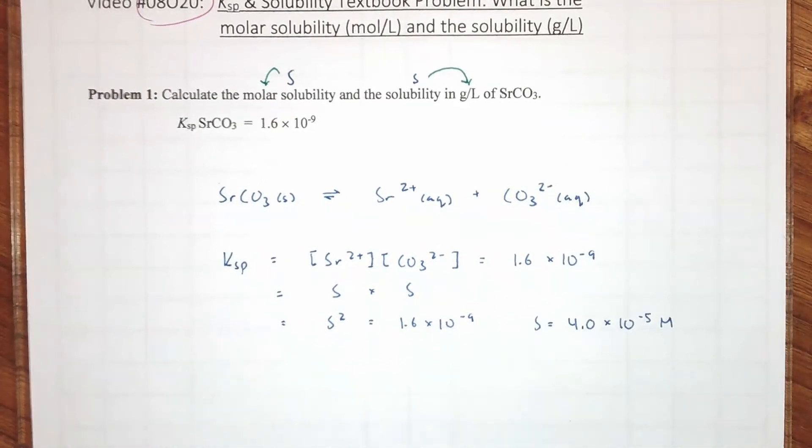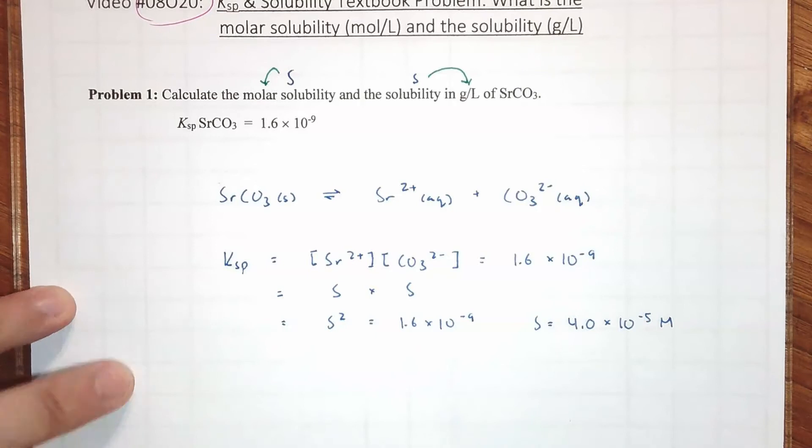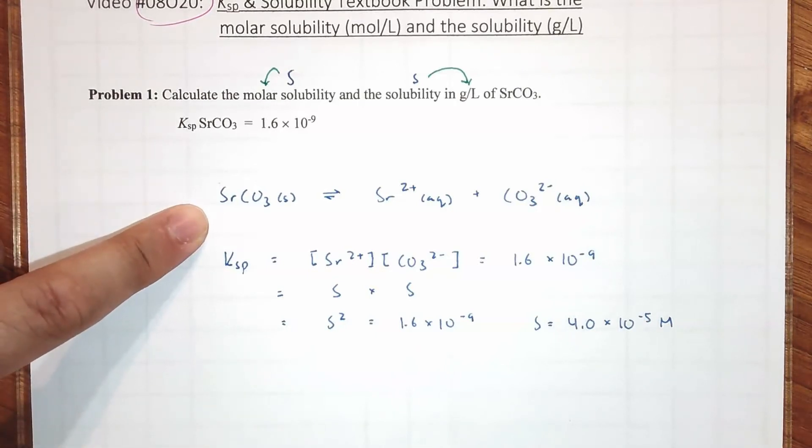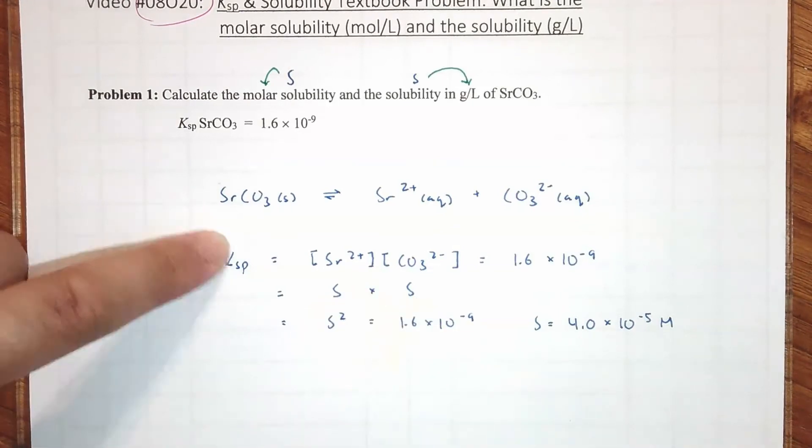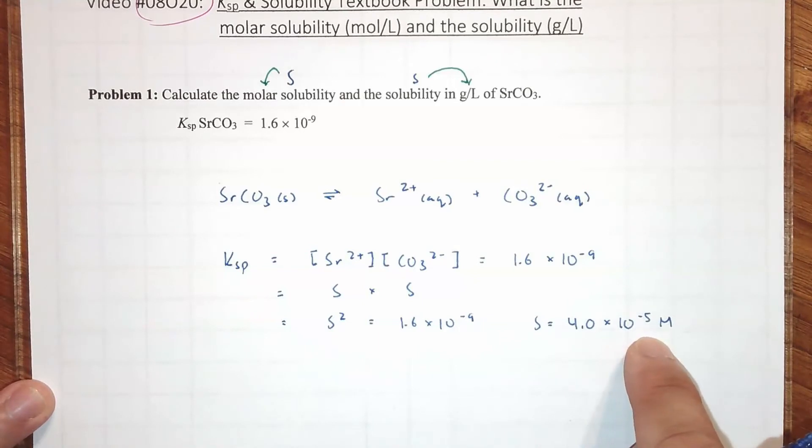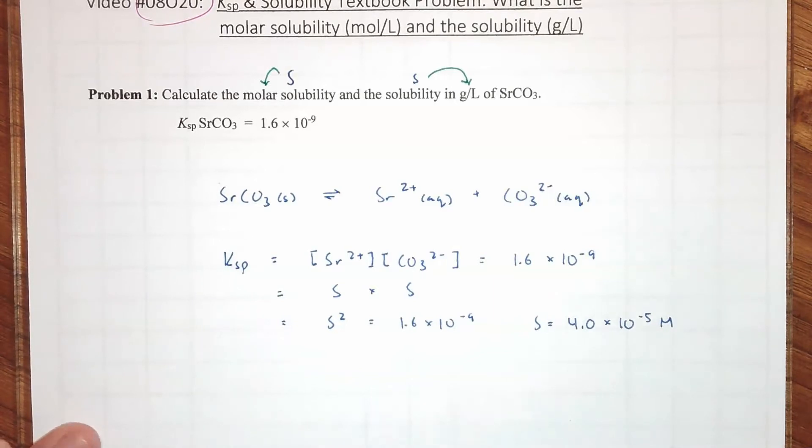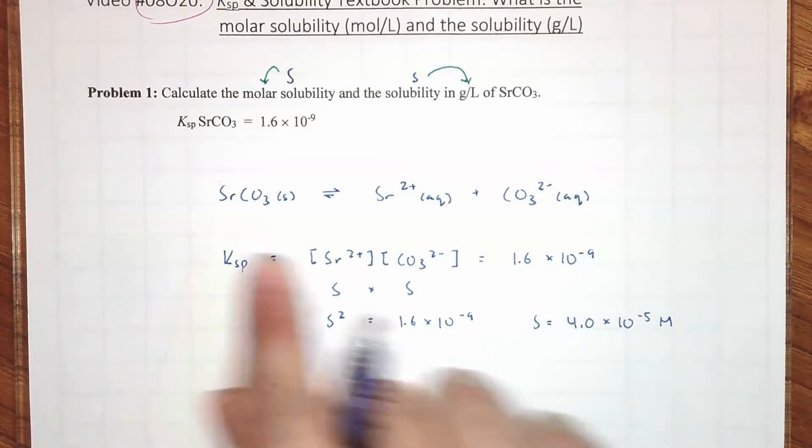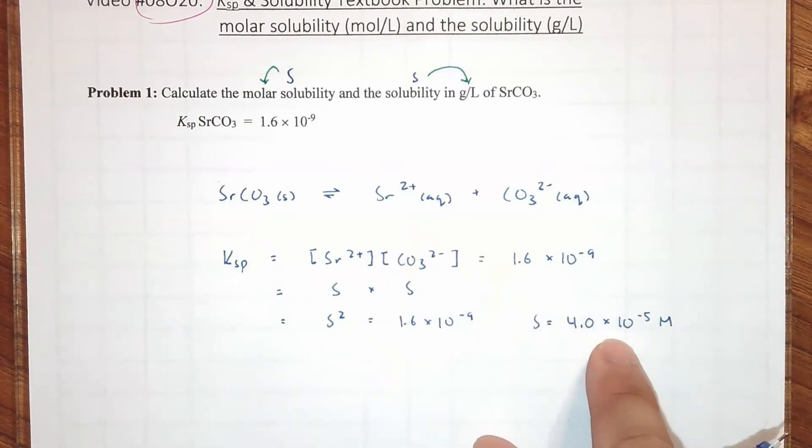And let me take the square root of that. I have on my calculator 1.6 times 10 to the -9 equals. And the square root of that number equals. Let me get into scientific notation. And S is literally the answer to the molar solubility. 4.0 times 10 to the -5 molar.